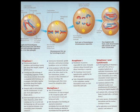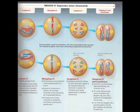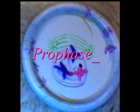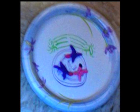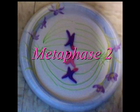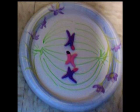Now for meiosis II. Remember that no replication occurs between meiosis I and meiosis II, and each process now occurs with two cells instead of one. In prophase II, a spindle apparatus forms and chromosomes, still composed of two chromatids associated at the centromere, move toward the metaphase II plate. In metaphase II, the chromosomes are positioned at the metaphase plate just as in mitosis. The two sister chromatids are not identical because of the crossing over that occurred during meiosis I. The kinetochores of sister chromatids are connected to spindle fibers from opposite poles.